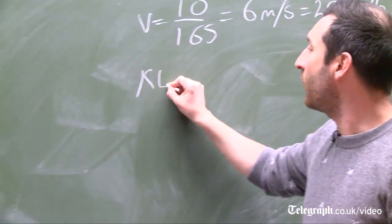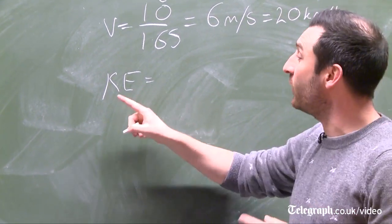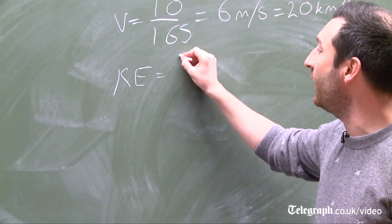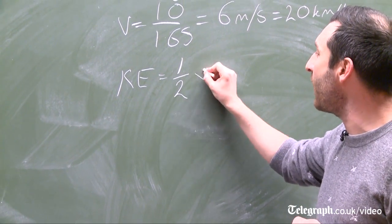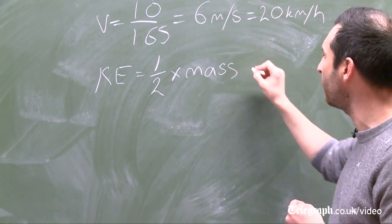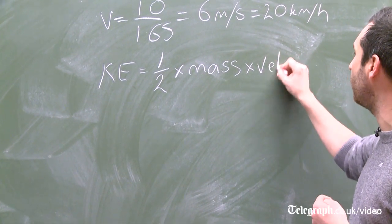Now kinetic energy can be calculated from the equation. Kinetic energy, KE, equals half the mass of the object, in this case Chris, times the velocity squared.